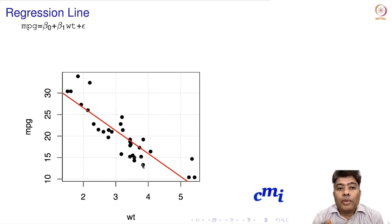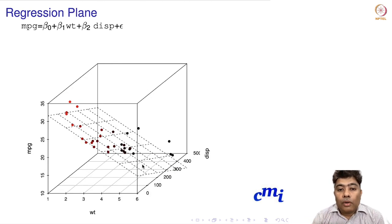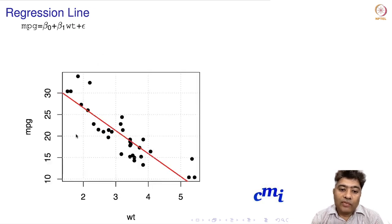Now if we consider a third variable—displacement—in our analysis, the model becomes beta naught plus beta one times weight plus beta two coefficient times displacement plus error.